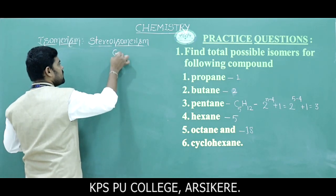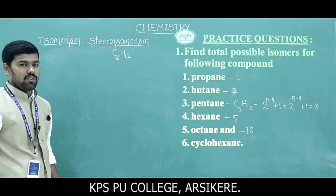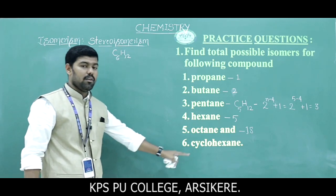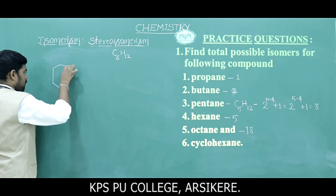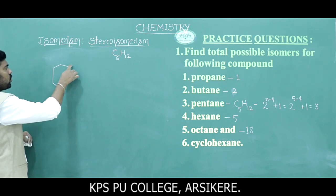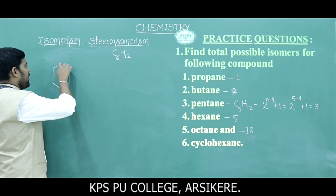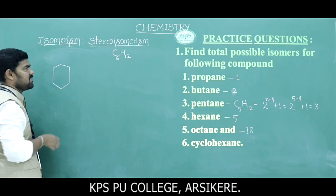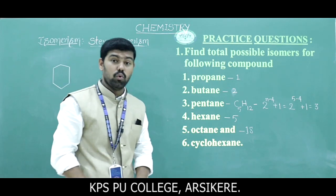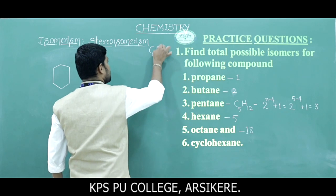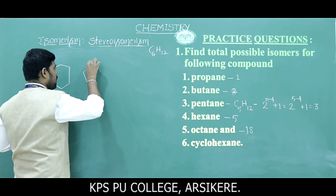Next is cyclohexane. Cyclohexane has the formula C6H12. Now let's find all possible isomers for cyclohexane. First, just write the 6-membered cyclohexane ring structure — that is one form.